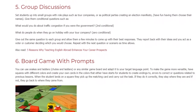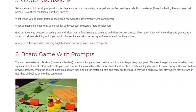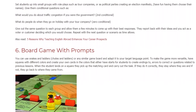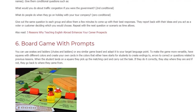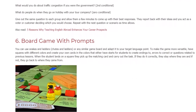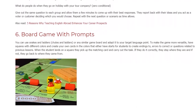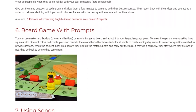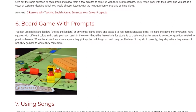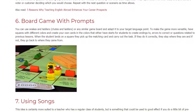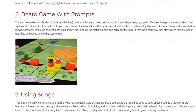6. Board Game With Prompts. You can use Snakes and Ladders, Chutes and Ladders, or any similar game board and adapt it to your target language point. To make the game more versatile, have squares with different colors and create your own cards in those colors that either have starts for students to create endings to, errors to correct, or questions related to previous lessons. When the student lands on a square they pick up the matching card and carry out the task. If they do it correctly, they stay where they are; if not, they go back to where they came from.